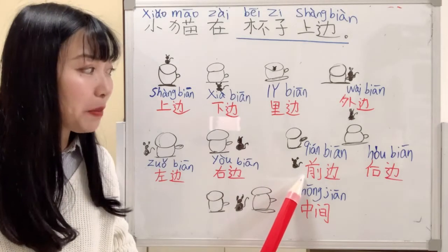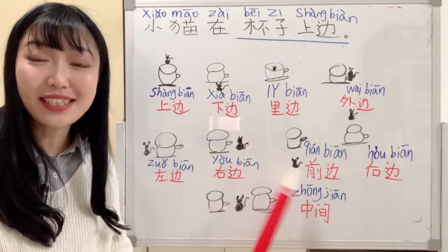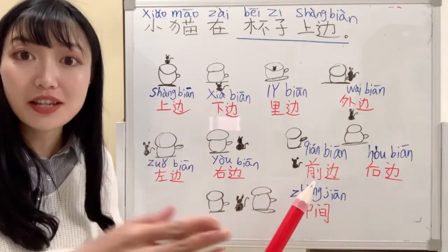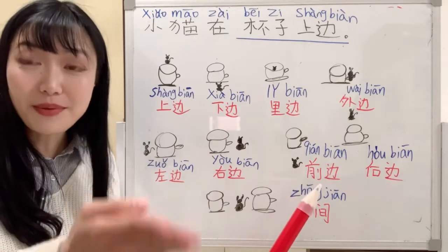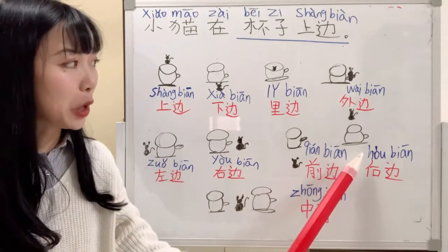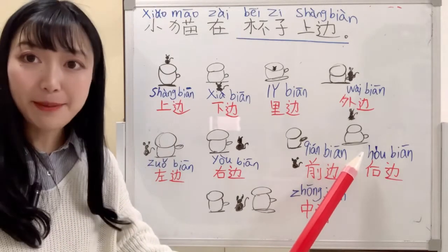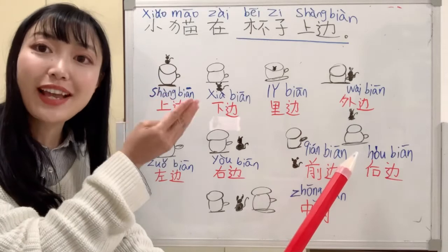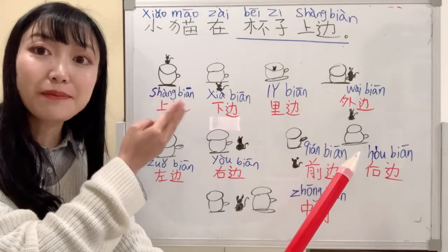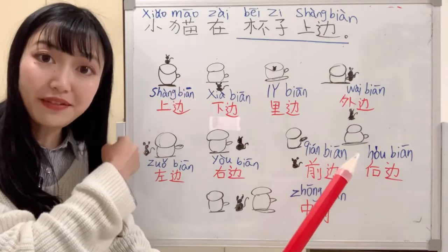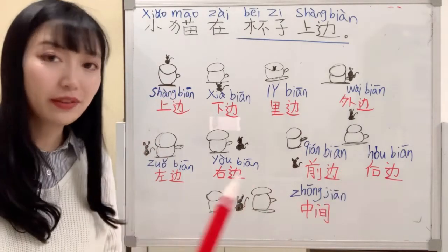小猫在杯子左边. 前边 means front. 小猫在杯子后边. 后边 means behind.